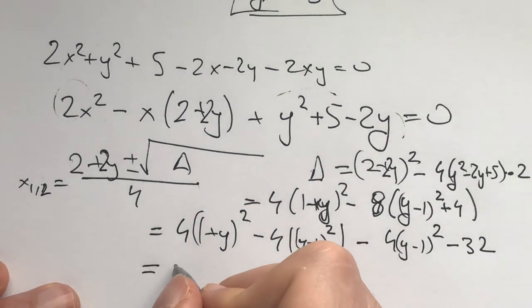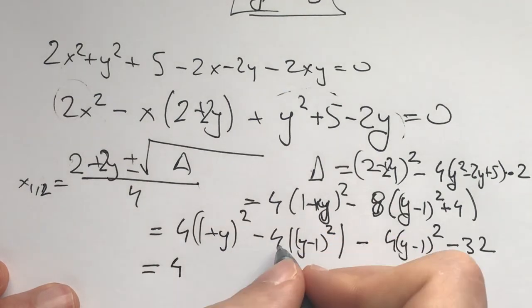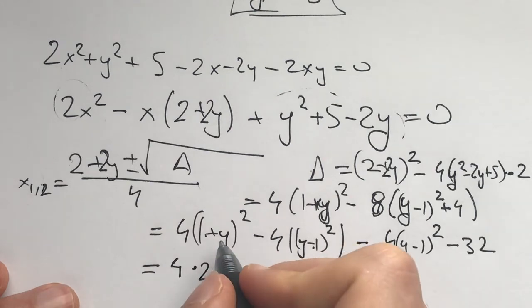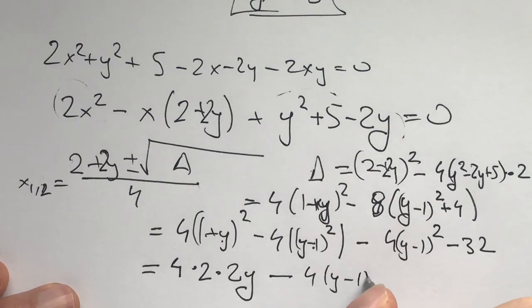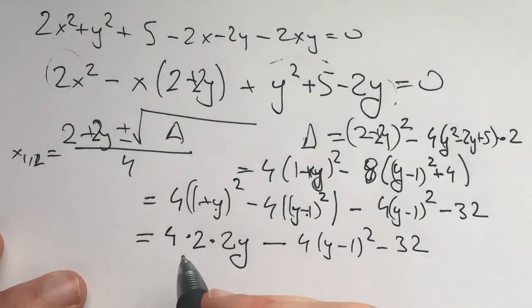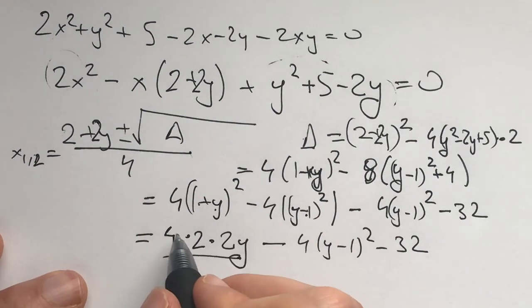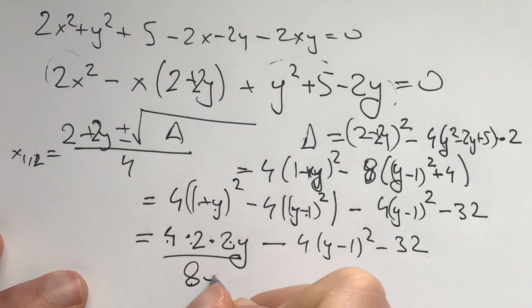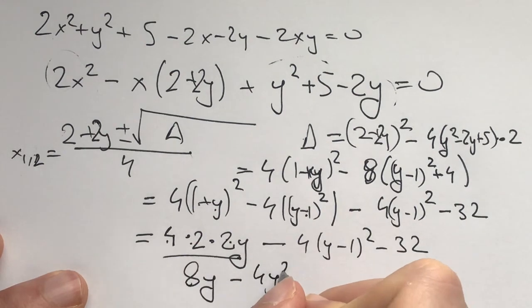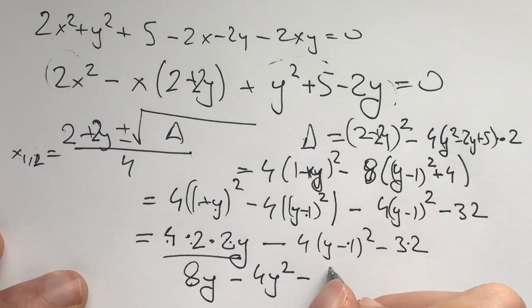This is a difference of squares. It is 4 times... this minus this is going to be equal to 2, and this plus this is going to be y. We have this and this minus 4(y minus 1) squared minus 32. Now this thing, we have 2 times 2 times 4 is 16. Here we will have 8. We will be left with 8y minus 4y squared. This is minus 4 minus 32, minus 36.